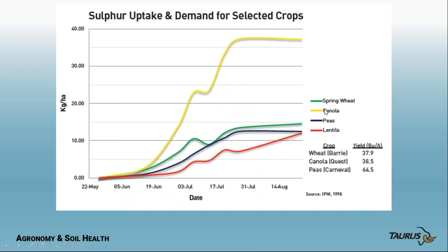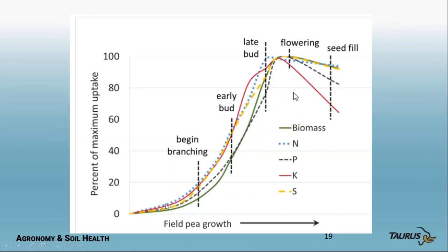Canola is a bigger user of sulfur. By about the 9th to 12th node stage, if you have a deficiency of something you better address it — flowers will start between the 12th and 16th node stage. If you don't get nutrients on before then, you're way behind in supporting that plant through flowering and the filling period. You want to get in at these earlier bud stages if you're deficient on anything.